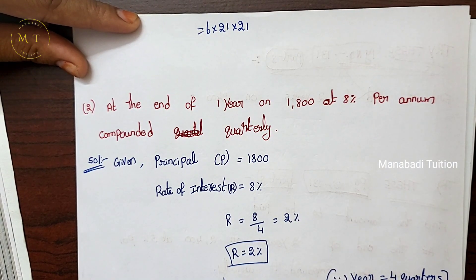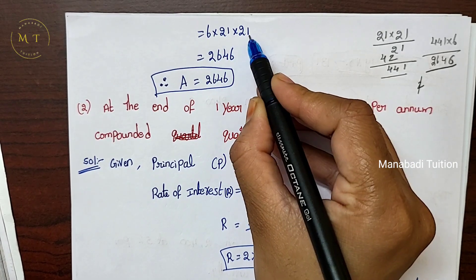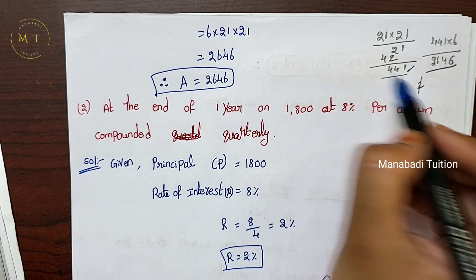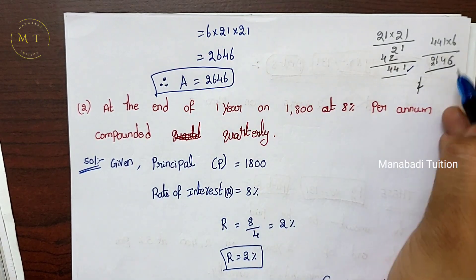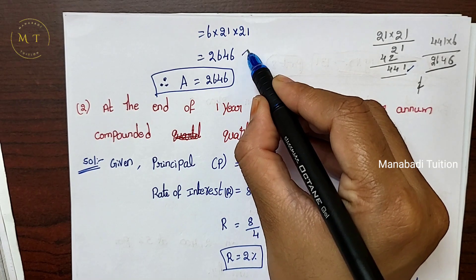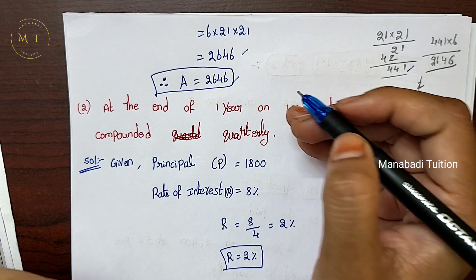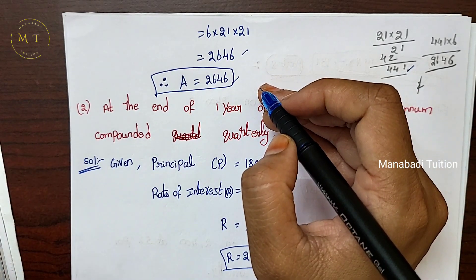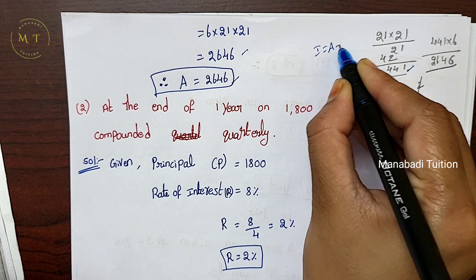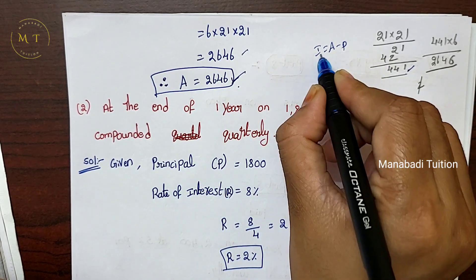Multiply: 21 × 21 = 441. Next, 441 × 6 = 2646. So the amount comes out to approximately 2646. The compound interest is found by subtracting the principal from the amount.